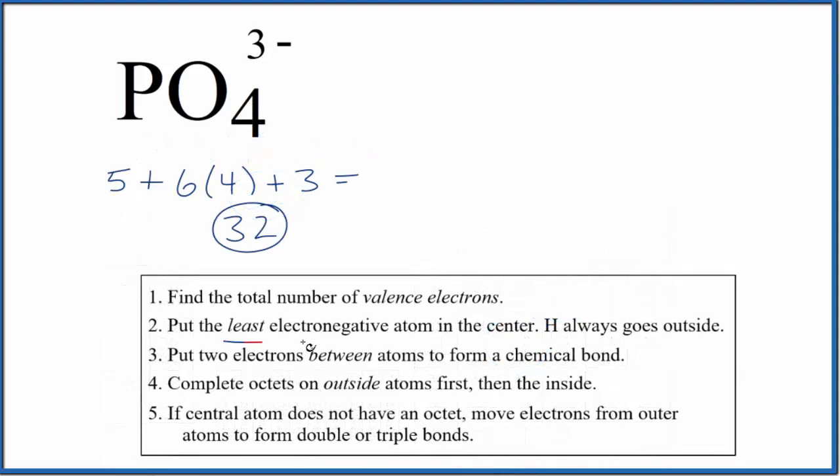So now we put the least electronegative element in the center of the Lewis structure. That's going to be the phosphorus. We have four oxygens, they'll go on the outside.